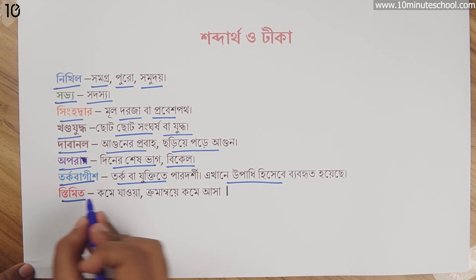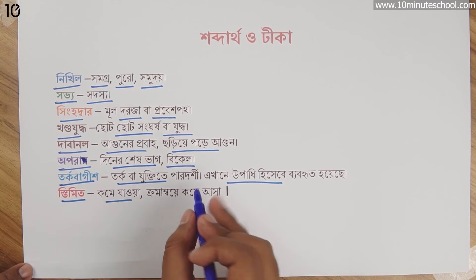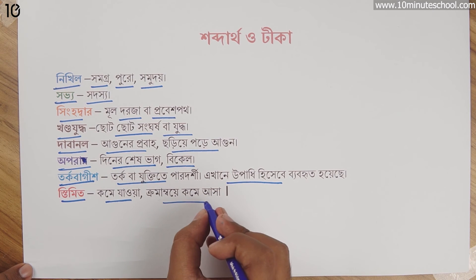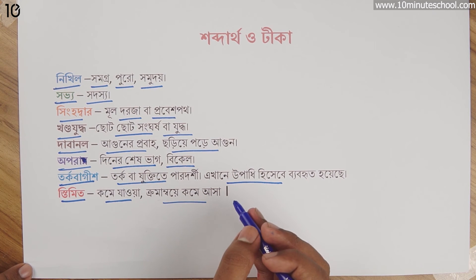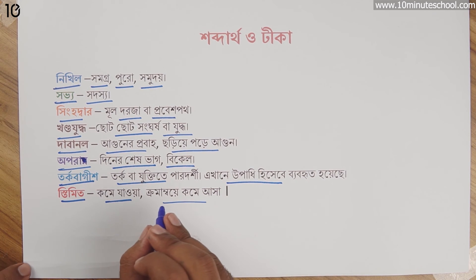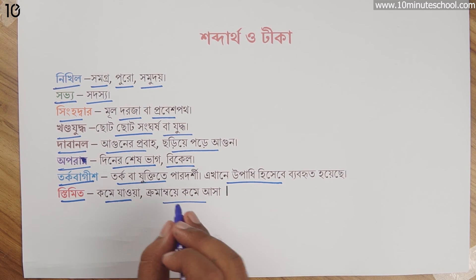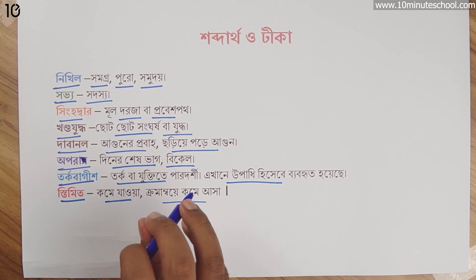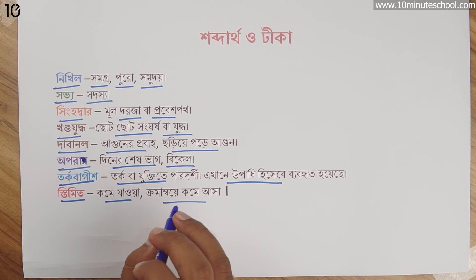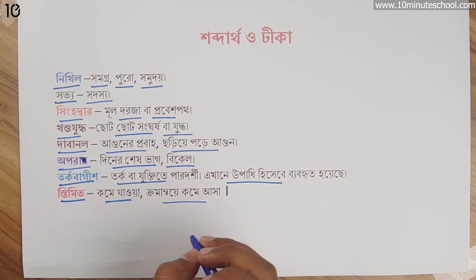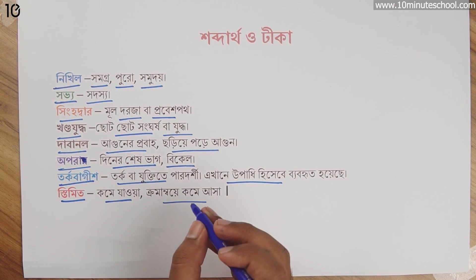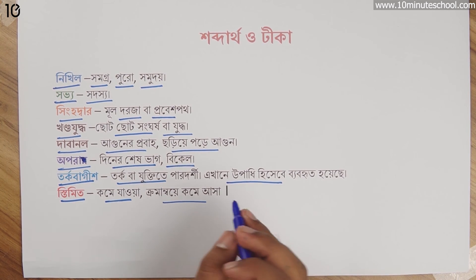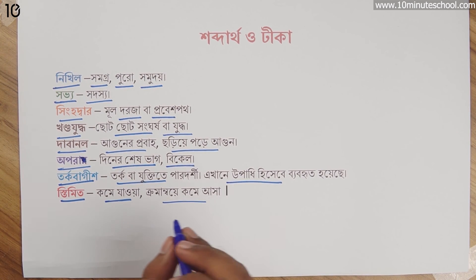So, a word whose meaning decreases or comes down — not in a sequential order but gradually — if that happens, we call it a word with two meanings (দুইটি অর্থ). Friends, if you have any questions about this word's meaning, please leave a comment without hesitation. Bondhu.